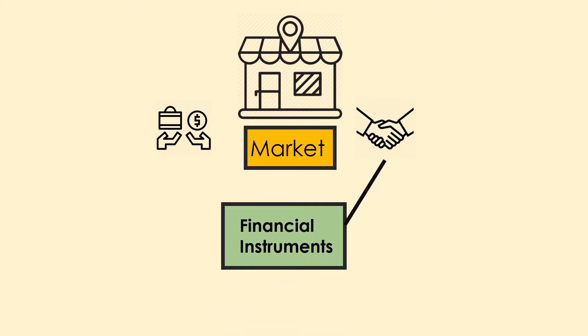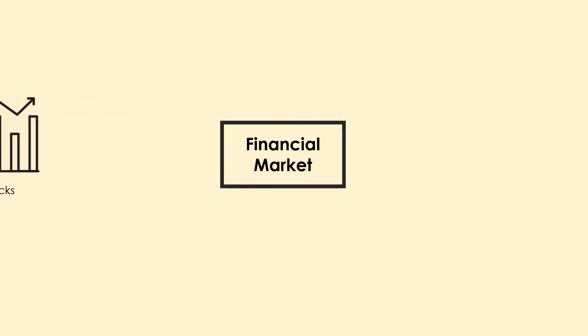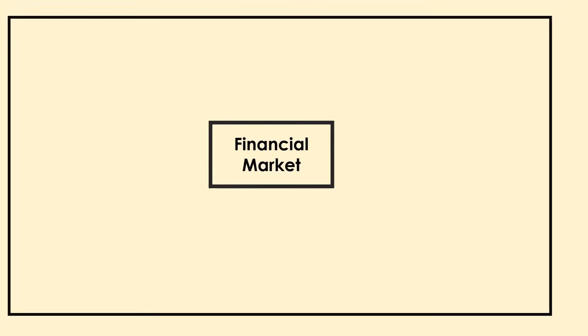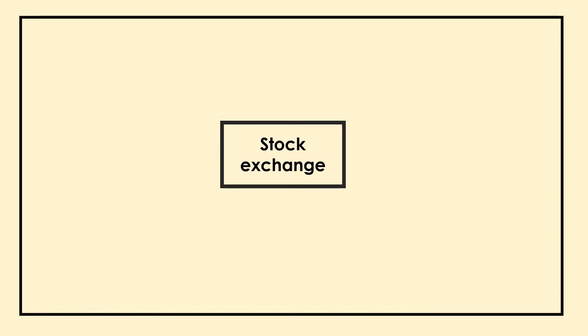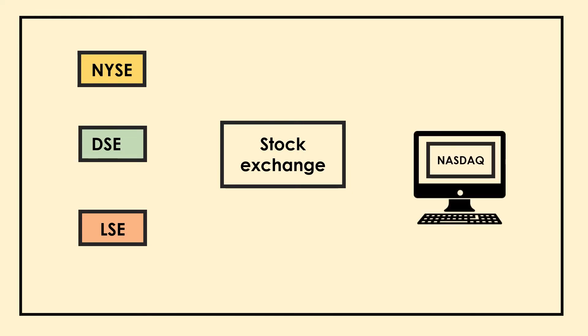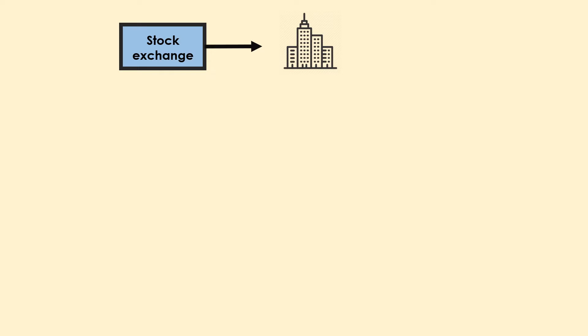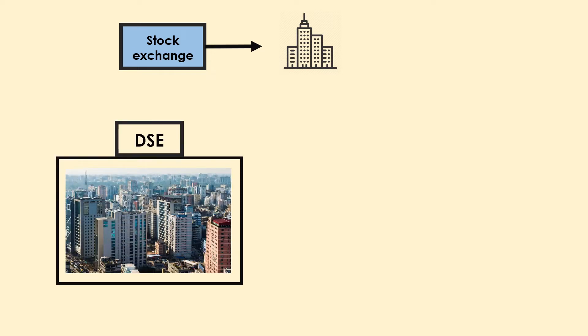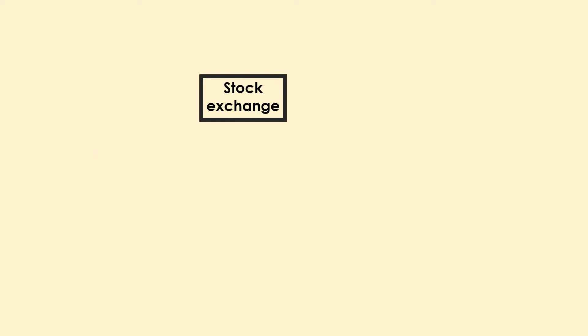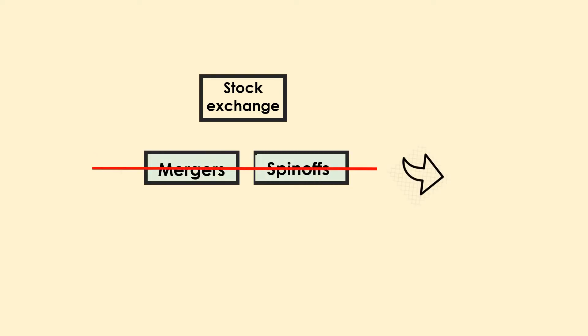We all know there is a place called the market where goods are sold, bought, or traded. Similarly, financial instruments have such markets — they are called financial markets. In a financial market, instruments like stocks, bonds, and derivatives are traded at a low cost. Financial markets are more popularly known as exchanges or stock exchanges. There are various stock exchanges around the world; some have physical existence like the NYSE, DSE, or LSE, and some have electronic or virtual existence.